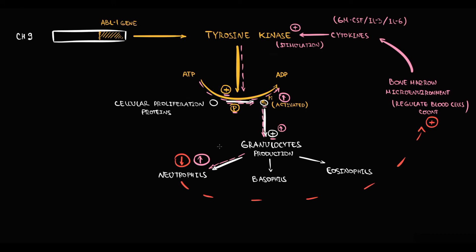Importantly, when granulocytes reach normal values, the bone marrow microenvironment begins to decrease the production of cytokines. So the stimulation of tyrosine kinase decreases, the activation of proteins responsible for cellular proliferation decreases, and thereby the production of neutrophils decreases.